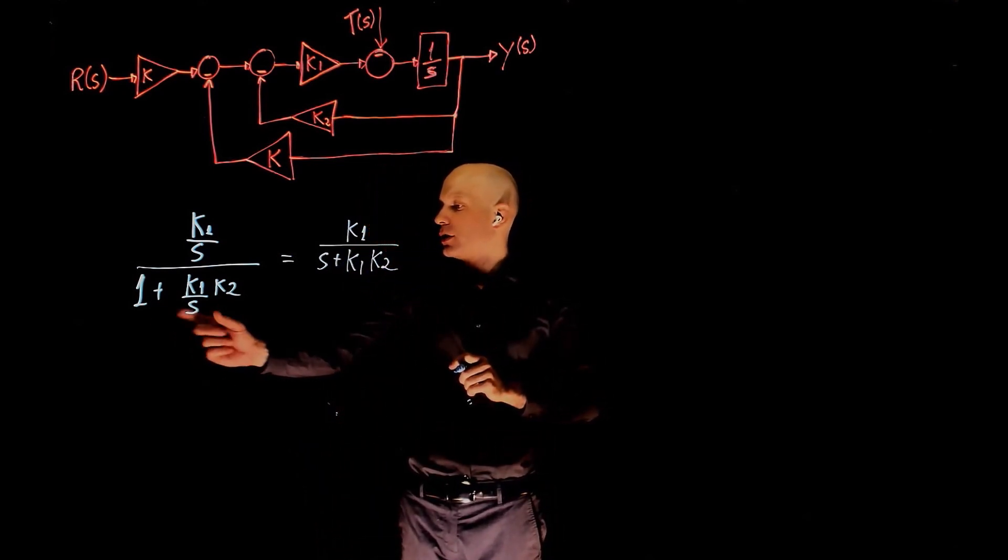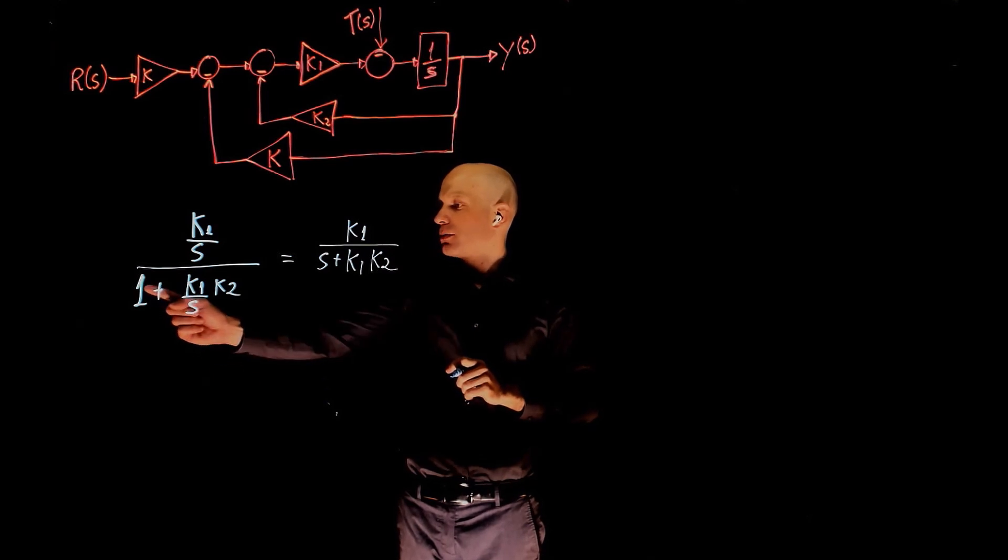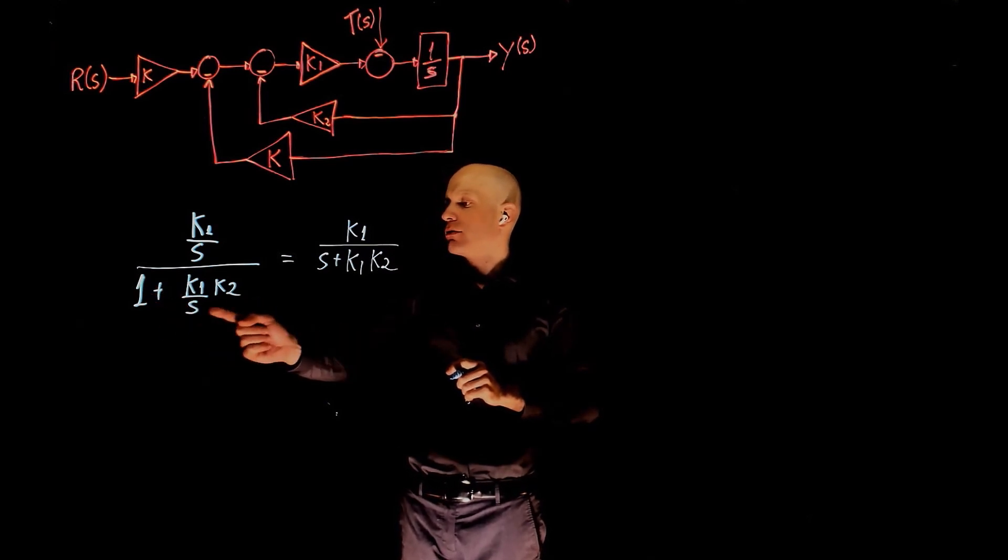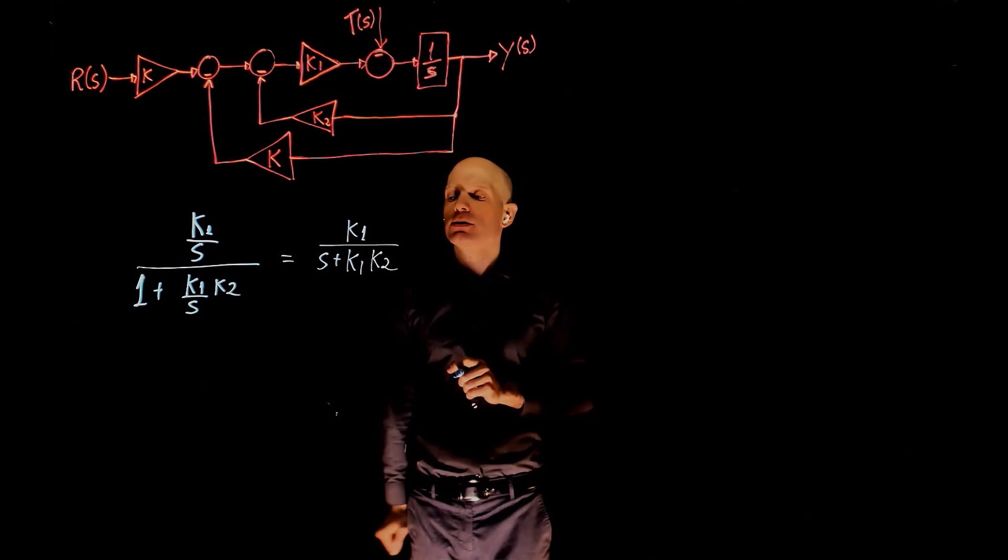Again, find the common denominator here, that is s. S multiplies 1, everything now is divided by s, the top and the bottom s will cancel.